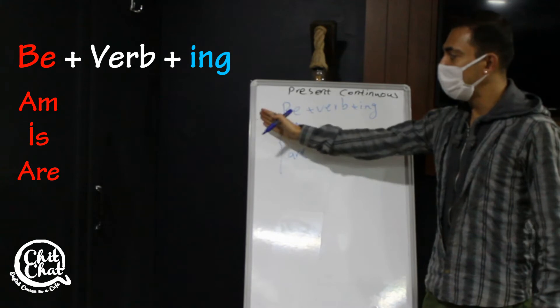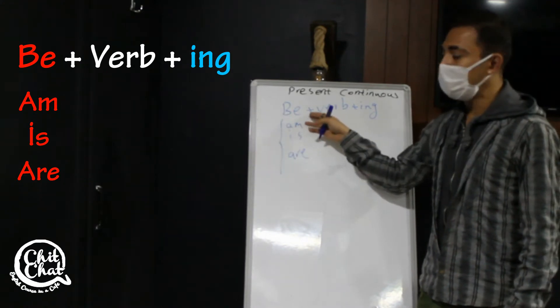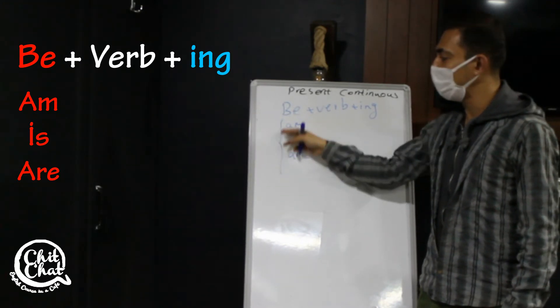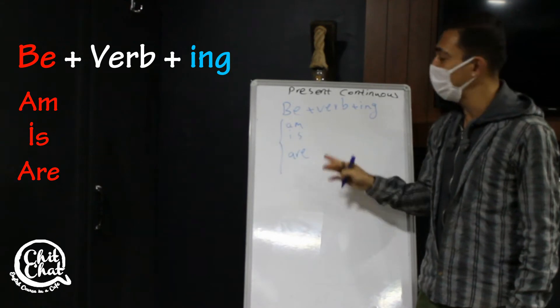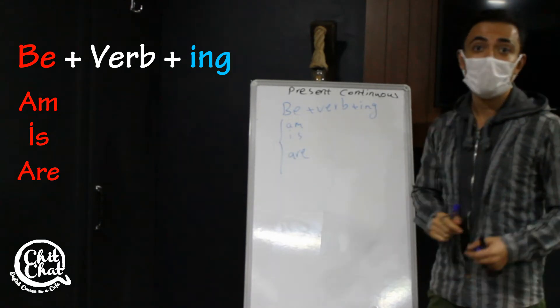So, we bring the subject first and after that, according to the subject, we use the suitable verb, suitable to be verb. And after that, we use verb plus ing.